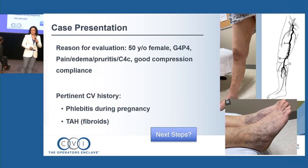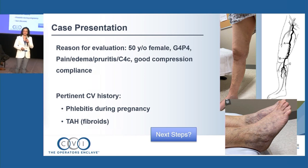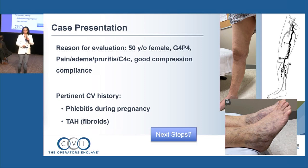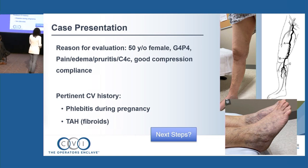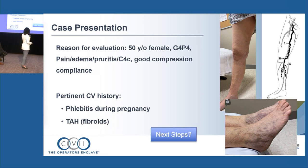I'll start with a case presentation. This patient is a 50-year-old female, G4P3 — a significant multiparous woman — with pain, edema, pruritus, and C4 disease, which is corona phlebectatica with symptoms in that area. She's been fairly compliant, dealing with this for many years. Pertinent history includes an episode of phlebitis managed with NSAIDs during one pregnancy and a total abdominal hysterectomy about a year prior to presentation.